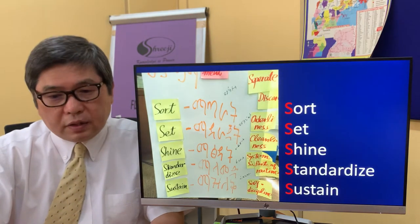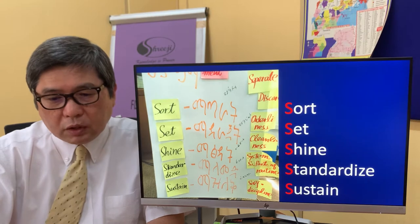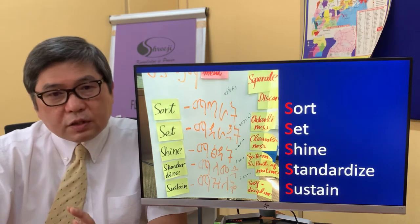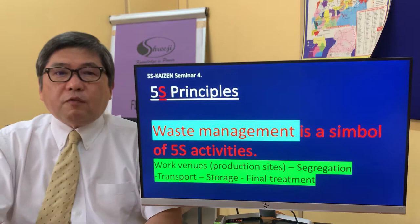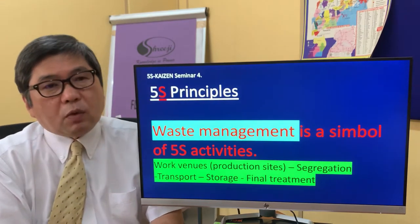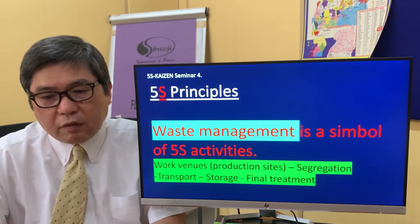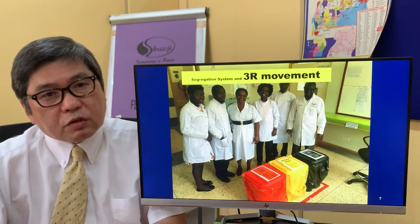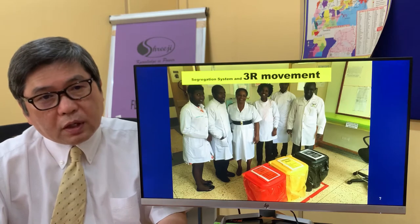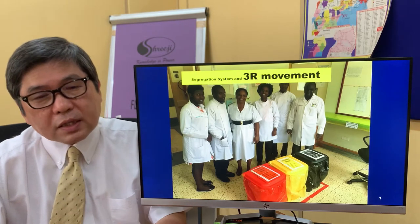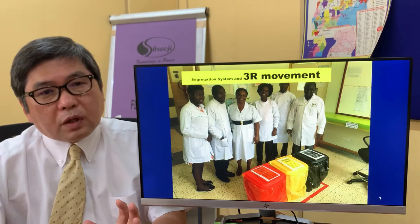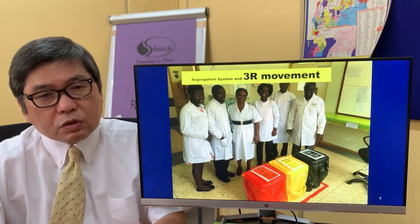5S is, as we have already been well informed: sort, set, shine, standardize and sustain. In this session, I want to make an emphasis that waste management is one of the important symbols of 5S activity. Waste management will start from the segregation at the production site of the waste. Within the hospital building, we have to have a clear segregation and colour coding of the waste bin, and then those collected waste should be sent to the final collection site.